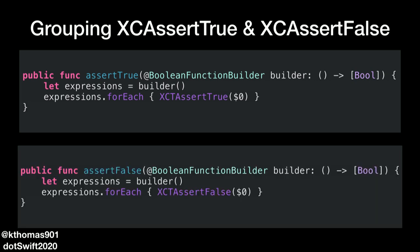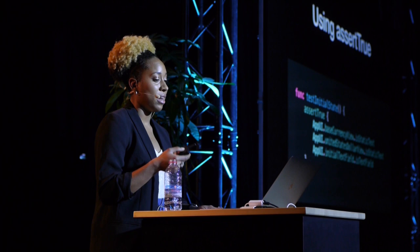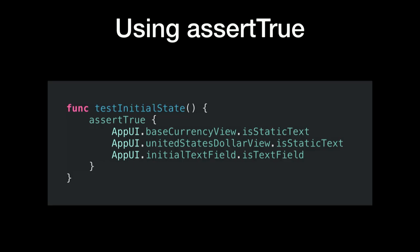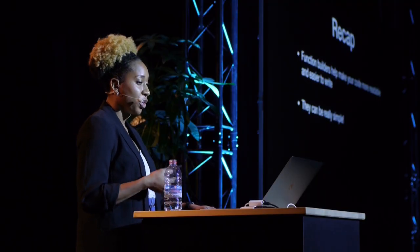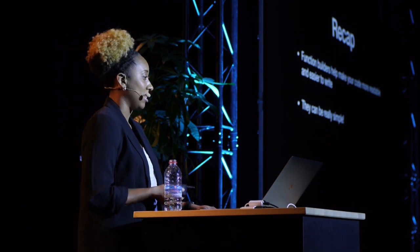We can do the same thing with assertFalse. Using assertTrue now makes it much easier to group assert statements in our tests instead of calling assertTrue or assertFalse over and over again — answering that question of making our tests easier to read and understand. To recap: function builders help make your code easier to read and easier to write. They can be really simple. That's the key thing to think about — they can get complex, but you can also use them to improve your code in a simple, elegant way.